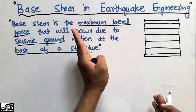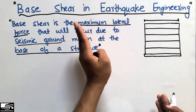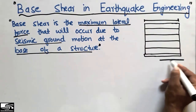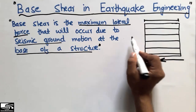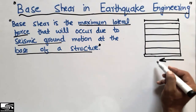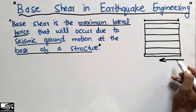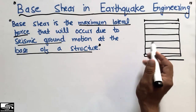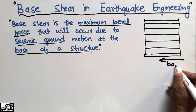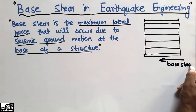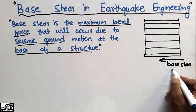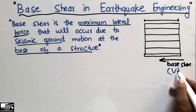For example, loads coming on the side of the building will produce some maximum lateral force due to the forces on each story of the building. This maximum lateral force produced due to the seismic ground motion is known as the base shear, and it is represented by capital V.